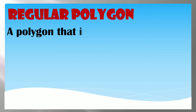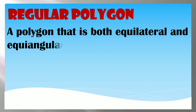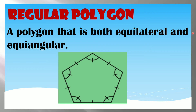A regular polygon is a polygon that is both equilateral and equiangular. In a regular polygon, all the sides are congruent and all the angles are also congruent.